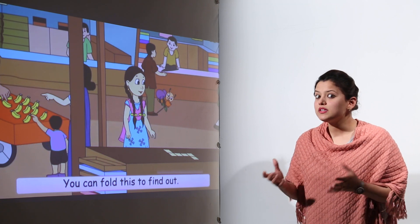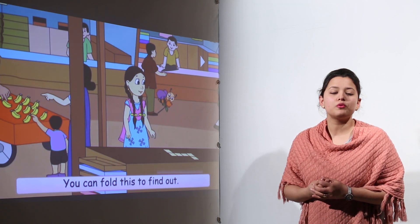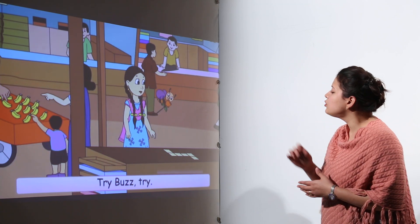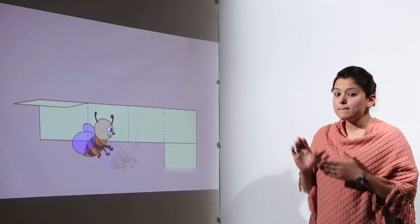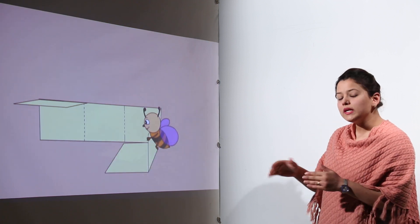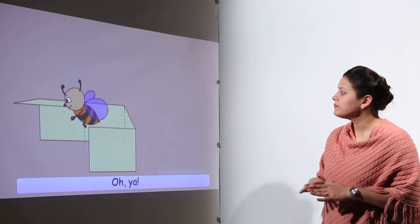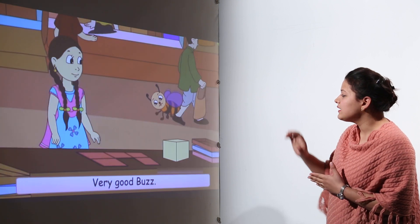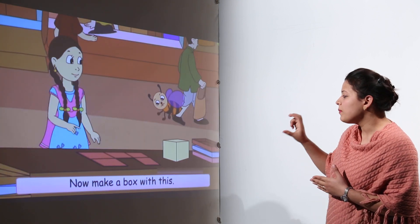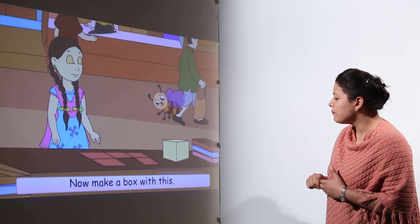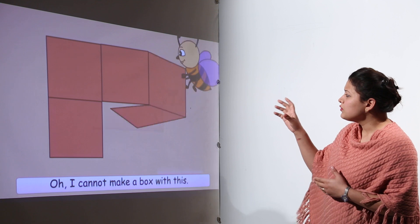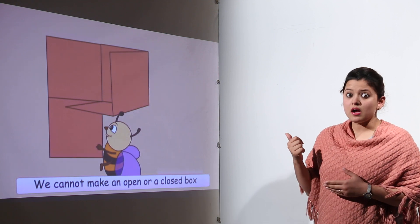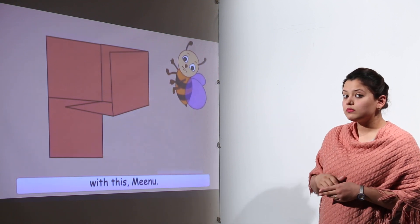This time they used a different shaped cardboard piece. You can see the cardboard piece lying over here. Buzz started doing it himself — he folded the cardboard pieces such that it had a top and bottom both. But if you try to make a box out of this cardboard, you cannot fold it.